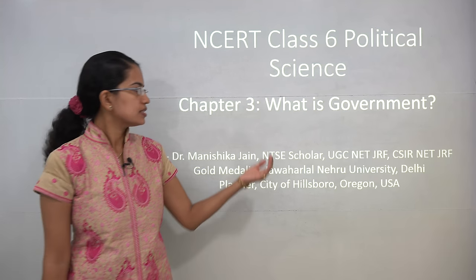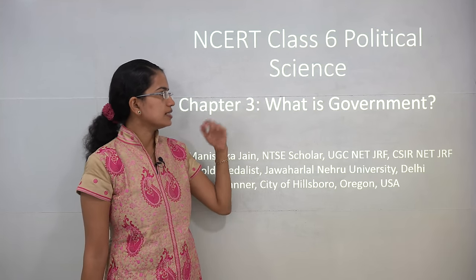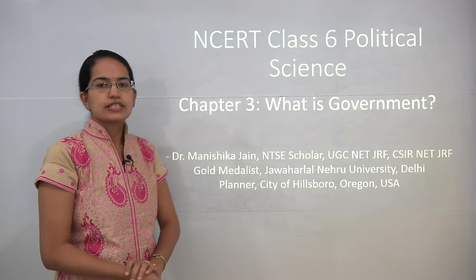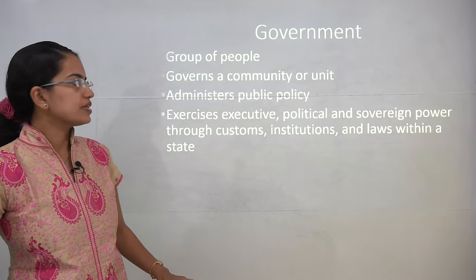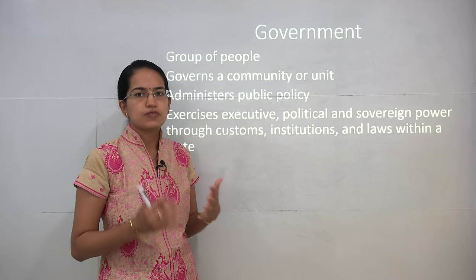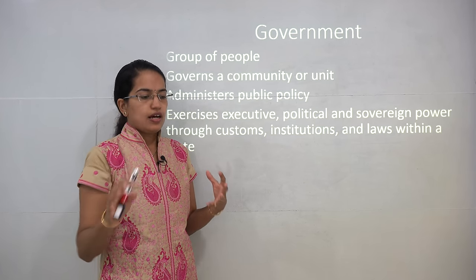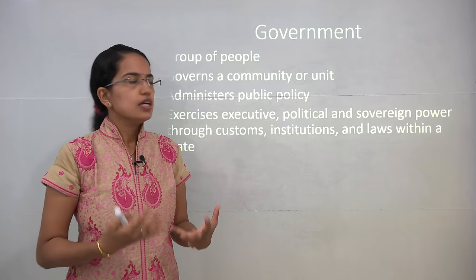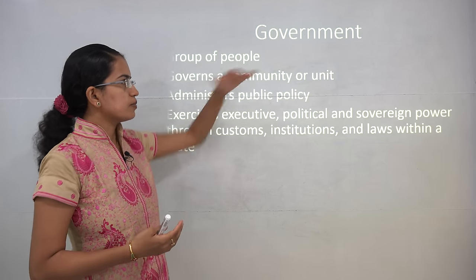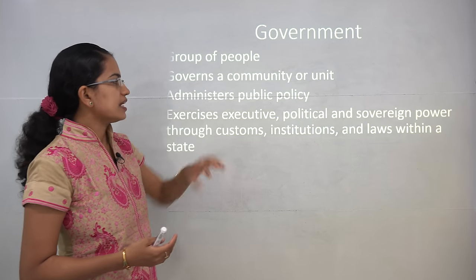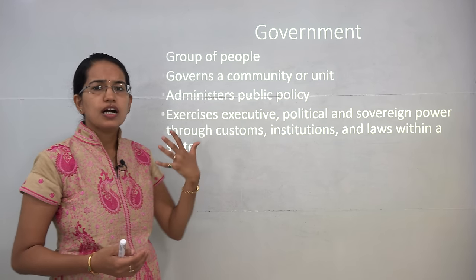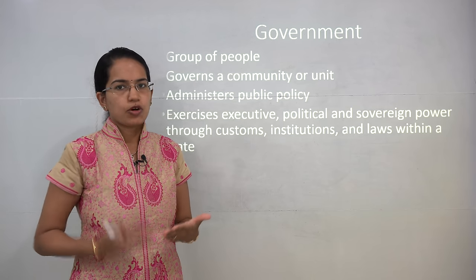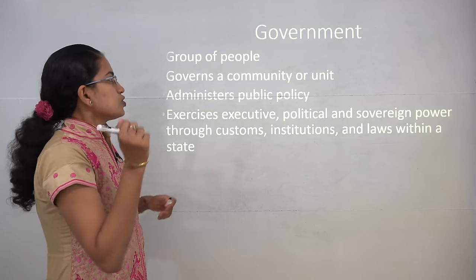Welcome. We will start with the third chapter on political science for Class 6th NCERT. This chapter talks about what is government. Let us start with understanding the definition of the word government. Government is a group of people who are working together as a community or a unit, and they try to serve for a kind of public purpose or have some public policy formulations that they do.